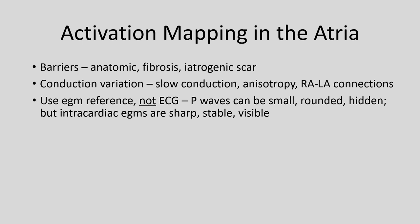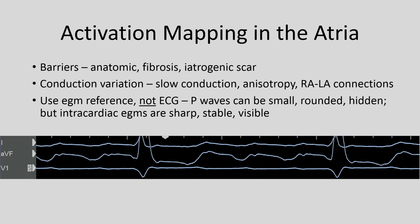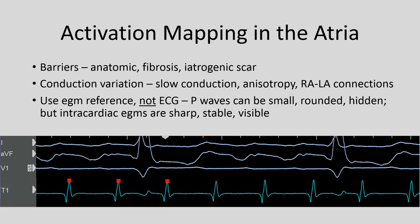Intracardiac electrograms, however, are sharp, stable, and visible. Here is an example of a patient with atrial flutter and flutter waves on the surface EKG. If you picked the depth of the flutter wave as your reference, you might find that on other beats the computer misplaces the red dot, or can't see it at all because it's swamped by the QRS or T wave. However, if you have sharp intracardiac electrograms, the computer can very easily and reproducibly place the red dot at exactly the same location with each beat, giving you a stable ruler.